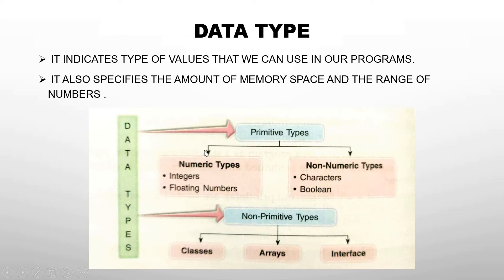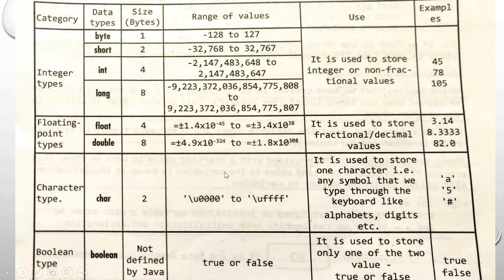Data type is of two types: primitive data type and non-primitive data type. Primitive data type has two categories: numeric type and non-numeric type. Under numeric, there are integer and floating-point types. Under non-numeric, there are character and boolean types.